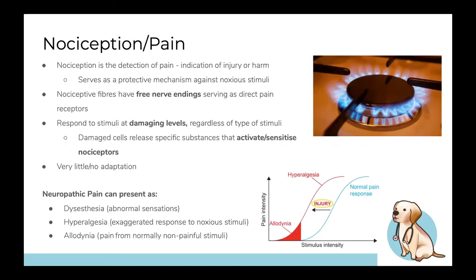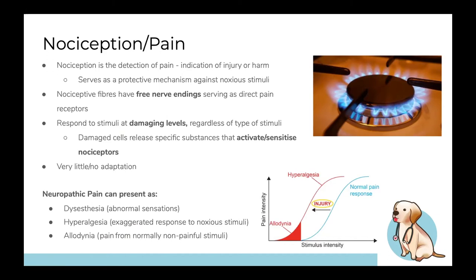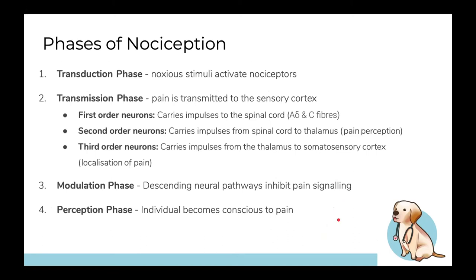Damaged cells release special substances that sensitize nociceptors, which is relevant in chronic pathology — more sensitive receptors mean more pain. Clinically, there are three types of neuropathic pain: dysesthesia (abnormal sensation), hyperalgesia, and allodynia. An injury shifts the pain response curve to the left — a less intense stimulus produces greater pain intensity. With allodynia, stimuli that normally cause no pain now produce pain.